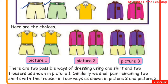There are 2 trousers and 3 shirts. The yellow shirt can be worn with the yellow trouser or the green trouser. The pink shirt can be worn with the yellow trouser or the green trouser. The violet shirt can be worn with the yellow trouser or the green trouser.